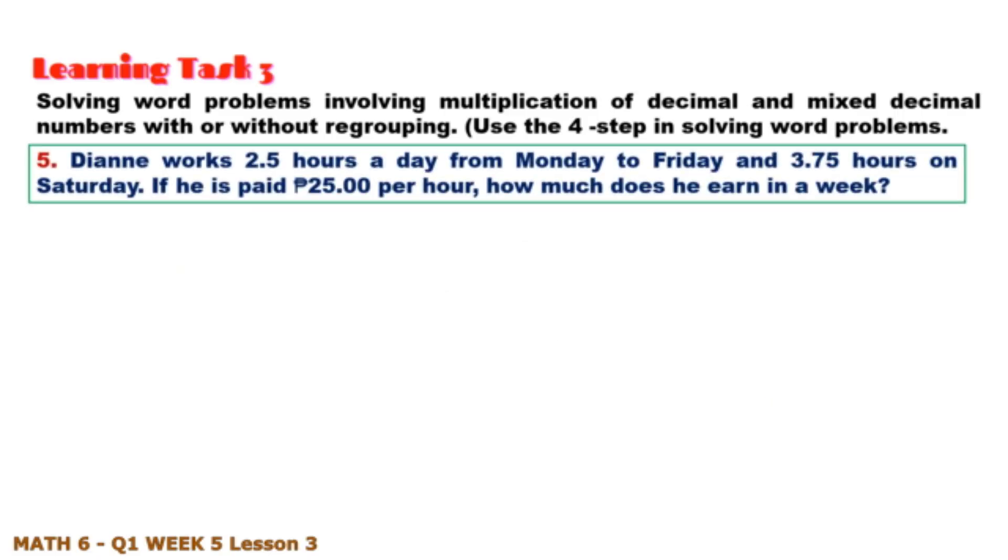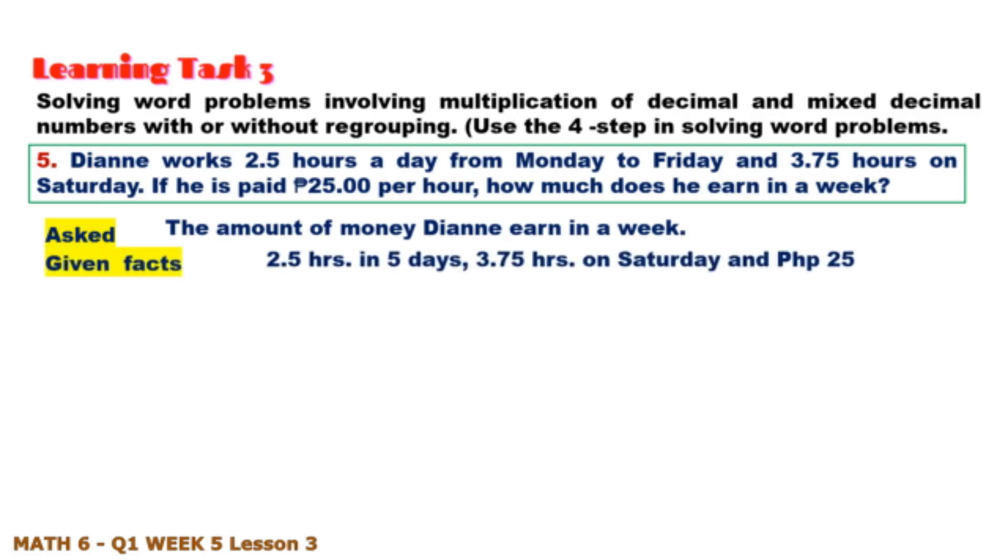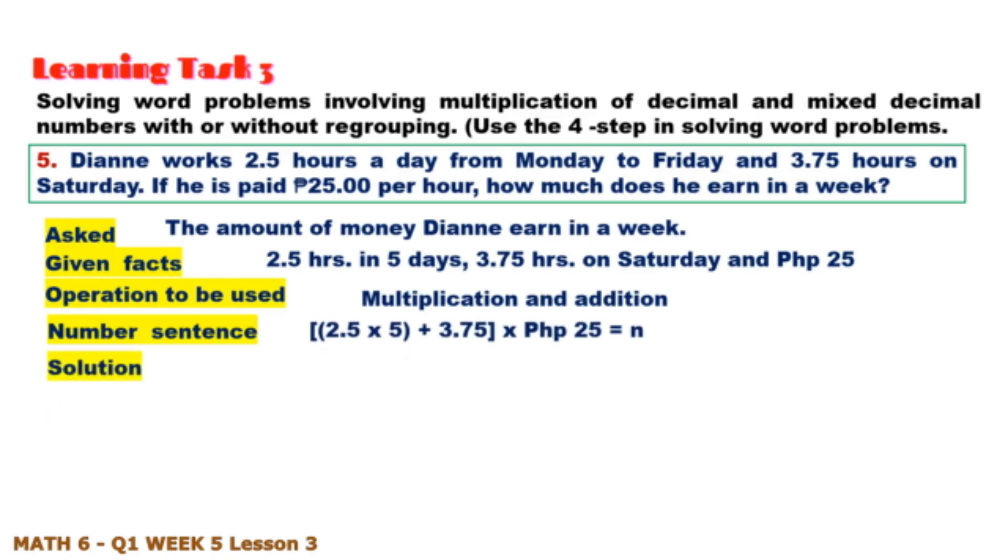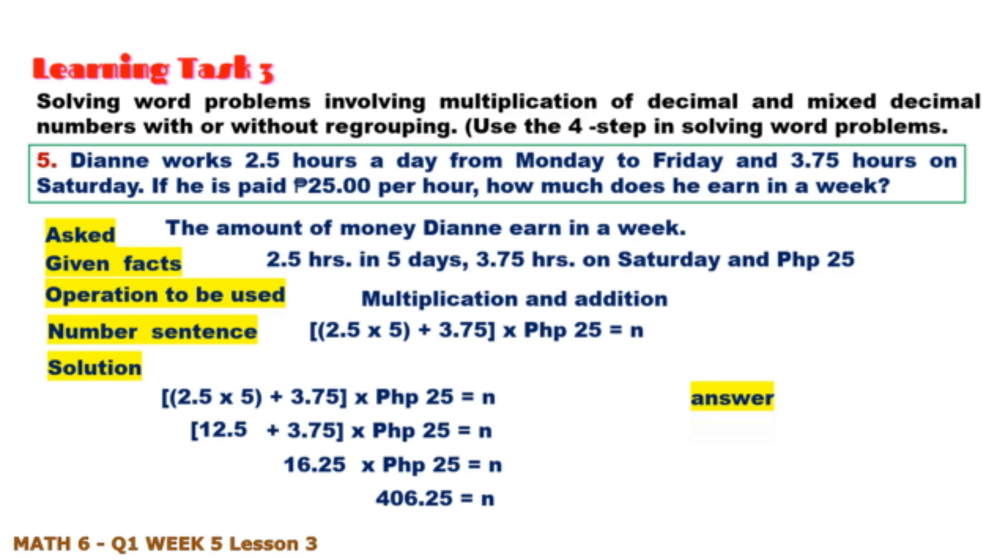Number five: Diane works 2.5 hours a day from Monday to Friday and 3.75 hours on Saturday. If he is paid 25 pesos per hour, how much does he earn in a week? What is asked? What are given? Operation to be used? Number sentence? And solution: Multiply first, then add, then multiply. The answer is 406 pesos and 25 centavos.